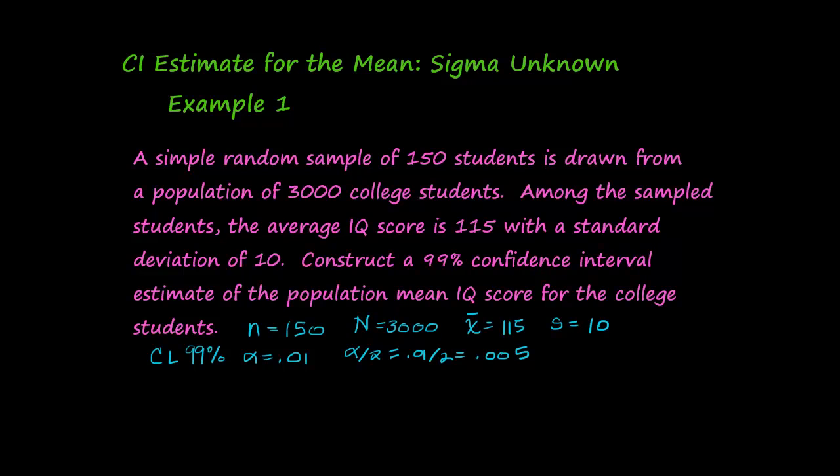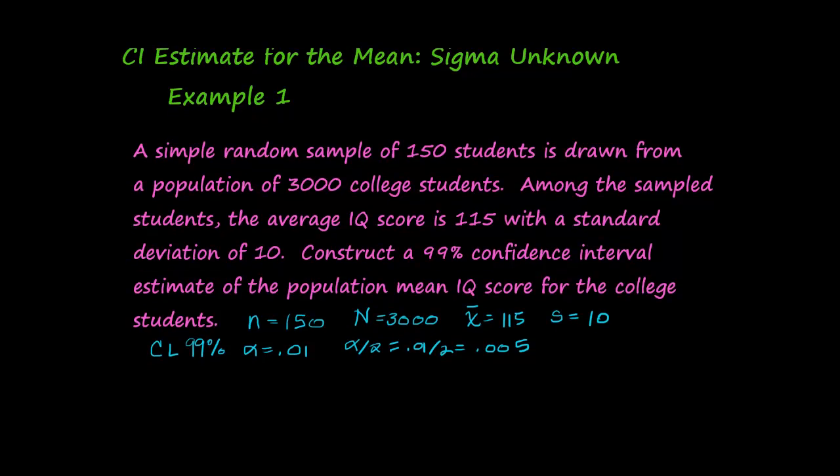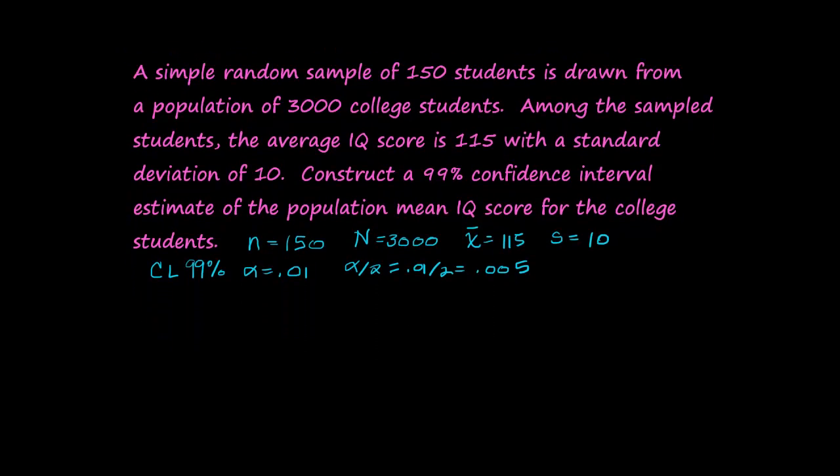I'm going to show you two methods for solving this and coming up with that confidence interval estimate. The first one, we'll use our formula for the margin of error. This will be method one. We'll use the calculation for the margin of error, where we use the critical value times sample standard deviation over the square root of n. So our critical value, t alpha over 2, is going to be t.005. And remember, we need the degrees of freedom. Degrees of freedom, that's n minus 1, 150 minus 1, or 149.